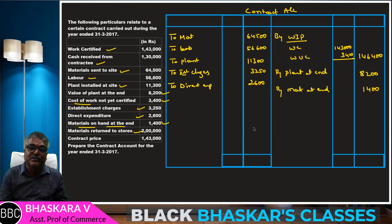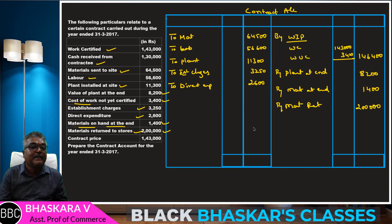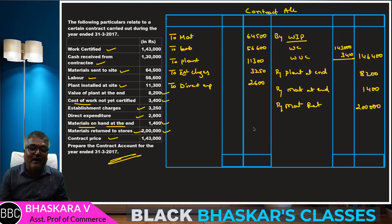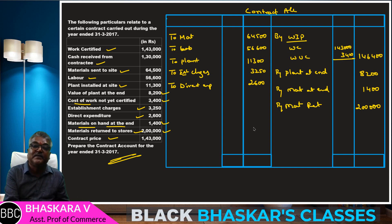Then, material return to stores — materials returned to stores. Then contract price: the contract is not yet complete, so by contractee's account. Now to balance: 1,46,400 plus 8,200 plus 1,400 plus 2 lakhs.